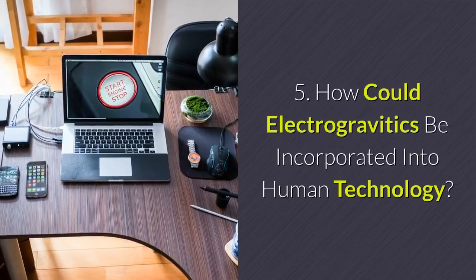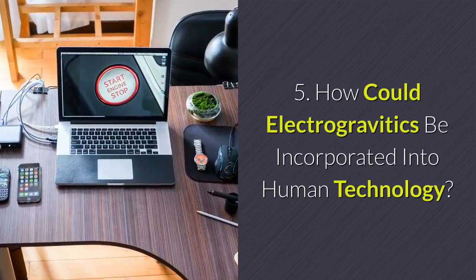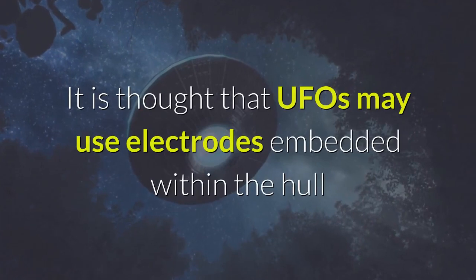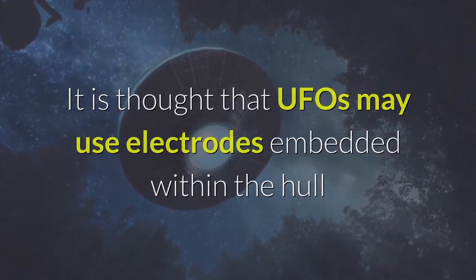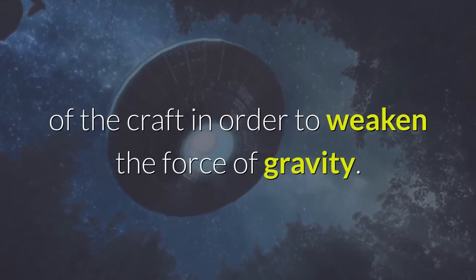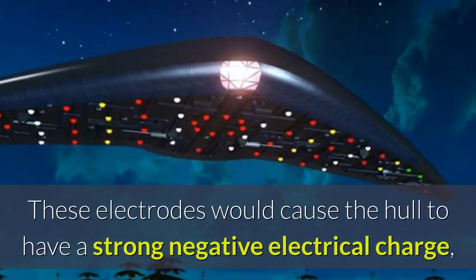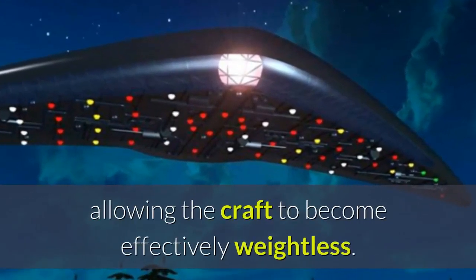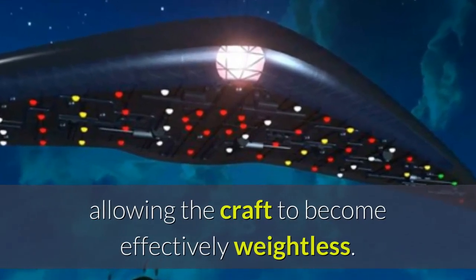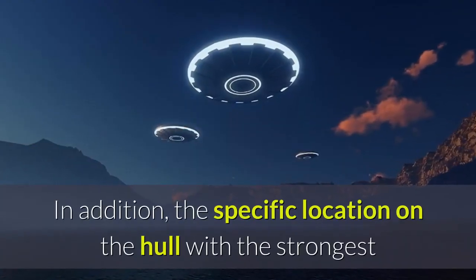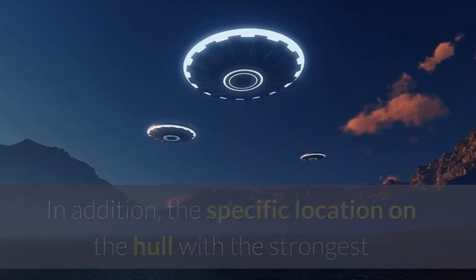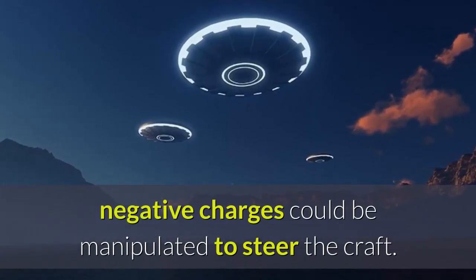How could electrogravitics be incorporated into human technology? It is thought that UFOs may use electrodes embedded within the hull of the craft in order to weaken the force of gravity. These electrodes would cause the hull to have a strong negative electrical charge, allowing the craft to become effectively weightless. In addition, the specific location on the hull with the strongest negative charges could be manipulated to steer the craft.